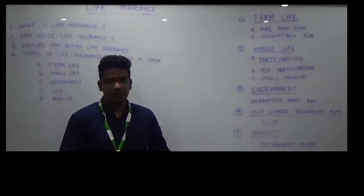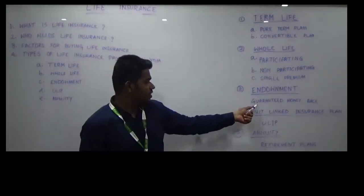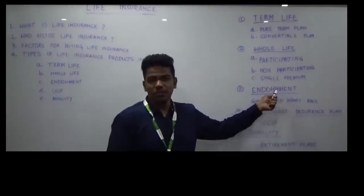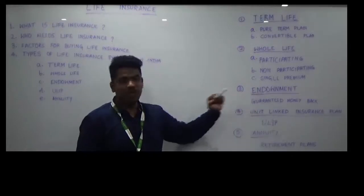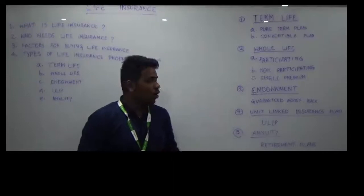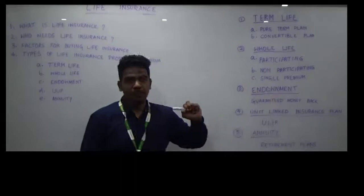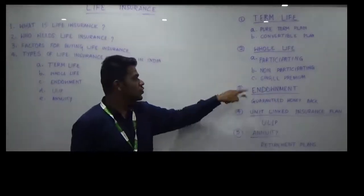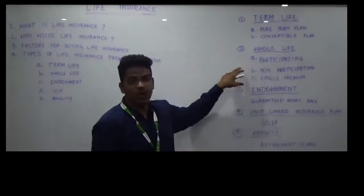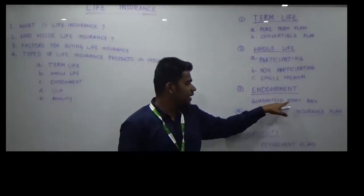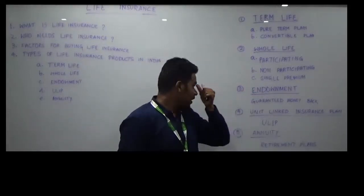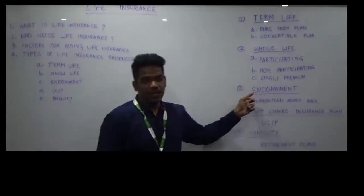Now let us understand the endowment plan. As the name suggests, it is a guaranteed money-back plan — a kind of policy where returns are guaranteed. If I invest in an endowment product, I can expect a return of premium. By surrendering the policy at any point, I can also get the cash surrender value accumulated on the policy. The key difference between whole life and endowment is the policy duration: endowment lasts 10, 15, 20, or 25 years, while whole life lasts 100 years. After policy maturity, I receive the maturity amount, which is why many people in India opt for the endowment plan.